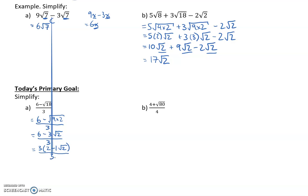On the bottom, we're dividing by 3. So 3 divided by 3 cancels to give you 1. What you're left with is 2 - √2, which is really helpful for what we're going to do with the quadratic formula tomorrow.